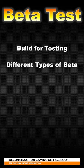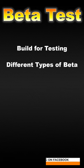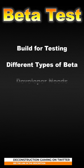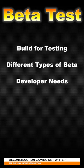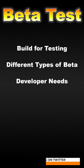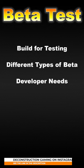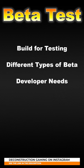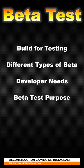Beta testing has many different levels or types that can be used. A game may go through an internal beta, a friends and family beta, a closed or private beta, an open beta, or any other beta testing depending on the needs of the developer.